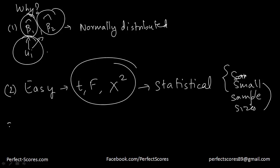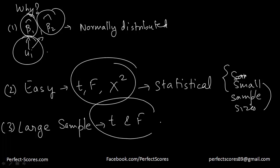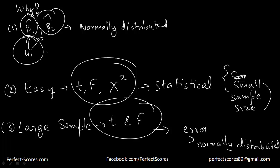For large sample sizes, if we find the t-statistics and the f-statistics, they themselves have an assumption that the error terms are normally distributed. They actually have this assumption that the error terms are normally distributed, which makes it easy and valid for us to use these tests for large samples. We are actually imposing the normality assumption — we are not proving it. In practical applications, we might have to look at the sample size data and check out whether the normality assumption is appropriate or not.